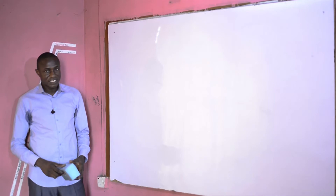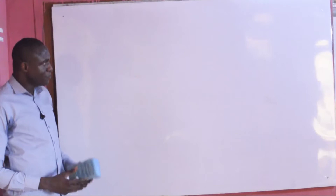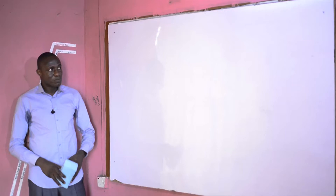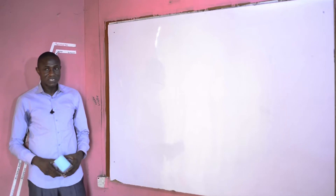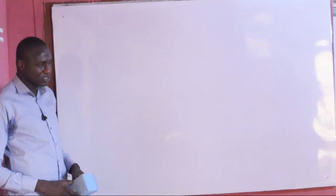Hello dear viewers and listeners. I welcome you to the last episode of season 7 of our weekly online chemistry class. In the previous episodes we've talked about the periodic properties and their variations both across the period and down the group of the periodic table, starting from ionization energy, electron affinity, electronegativity, electropositivity, atomic radius and ionic radius.